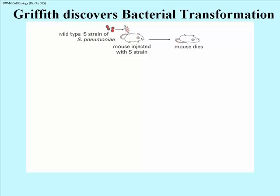He was actually studying not influenza, which is of course a virus, but the Streptococcus pneumonia bacterium that killed people during that epidemic. Here we have the wild type strain of Streptococcus pneumonia called the S strain. The S refers to the smooth appearance of colonies on agar plates. When these bacteria were injected into a mouse, the mouse would die within a day or so.